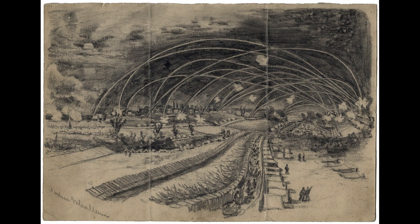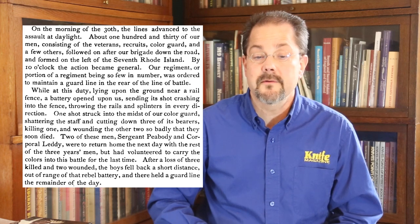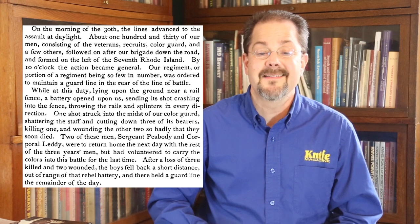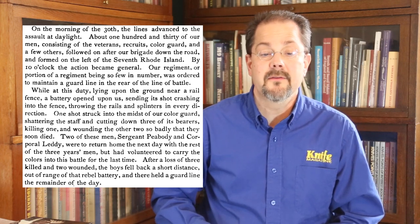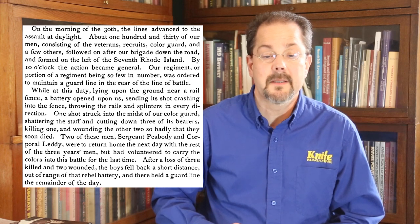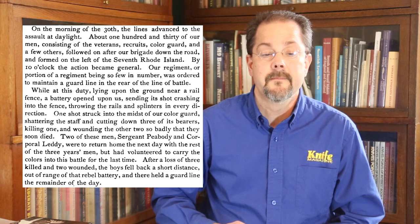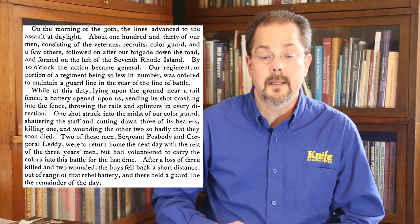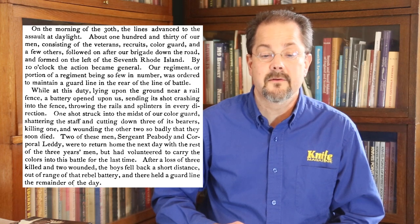On the morning of the 30th, the Lions advanced to the assault at daylight. About 130 of our men, consisting of the veterans, recruits, color guard, and a few others, followed on after our brigade down the road and formed on the left of the 7th Rhode Island. By 10 o'clock, the action became general. Our regiment, or portion of our regiment, being so few in number, was ordered to maintain a guard line in the rear of the line of battle. While at this duty, lying upon the ground near a rail fence, a battery opened upon us, sending its shot crashing into the fence, throwing the rails and splinters in every direction. One shot struck into the midst of our color guard, shattering the staff and cutting down three of its bearers, killing one and wounding the other two so badly that they soon died.